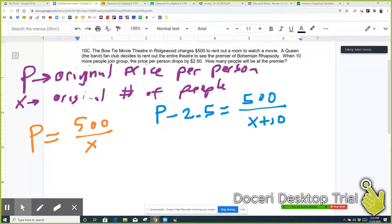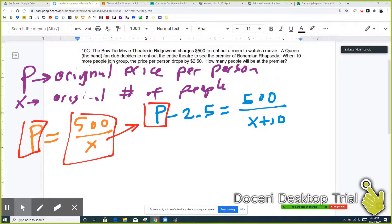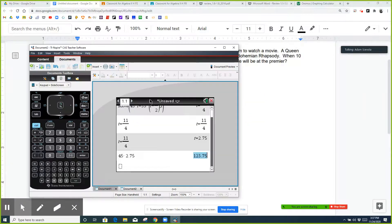So now we're going to solve this system of equations, which you could just type into the calculator. Now, if you don't have a calculator that can do solve, you can do substitution and replace P with 500 over X. And then you could just solve that equation. It's a rational equation. All right. Now on the calculator, we're going to go to the calculator screen.